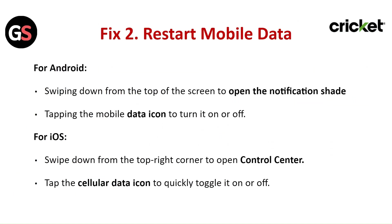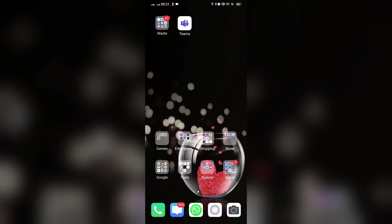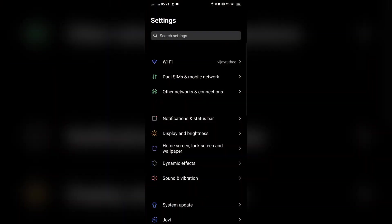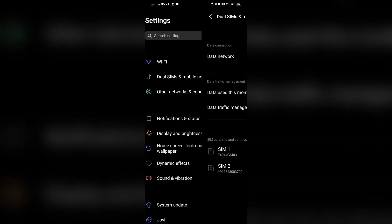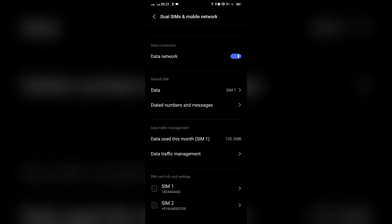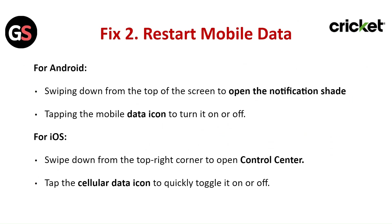Fix 2: Restart the Mobile Data. For Android, swipe down from the top of the screen to open the notification shade, then tap on the Mobile Data icon to turn it off and back on. For iOS, swipe down from the top right corner to open the Control Center, then tap on the Cellular Data icon to turn it off and back on.